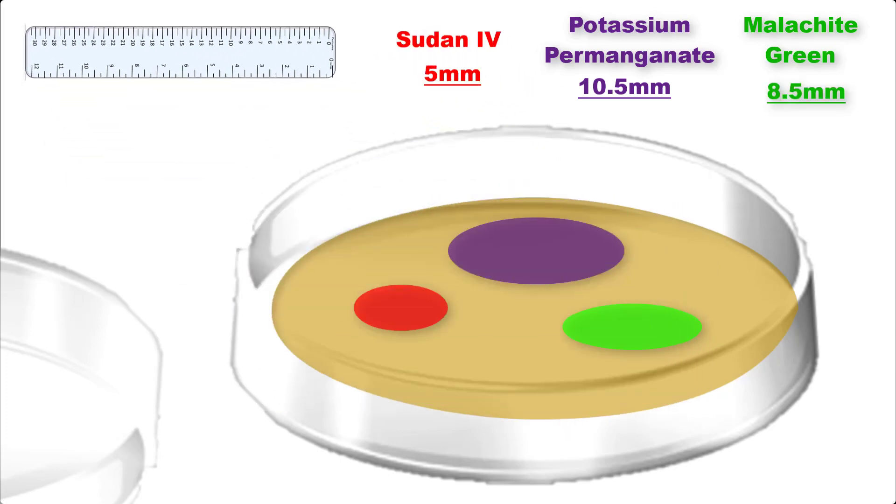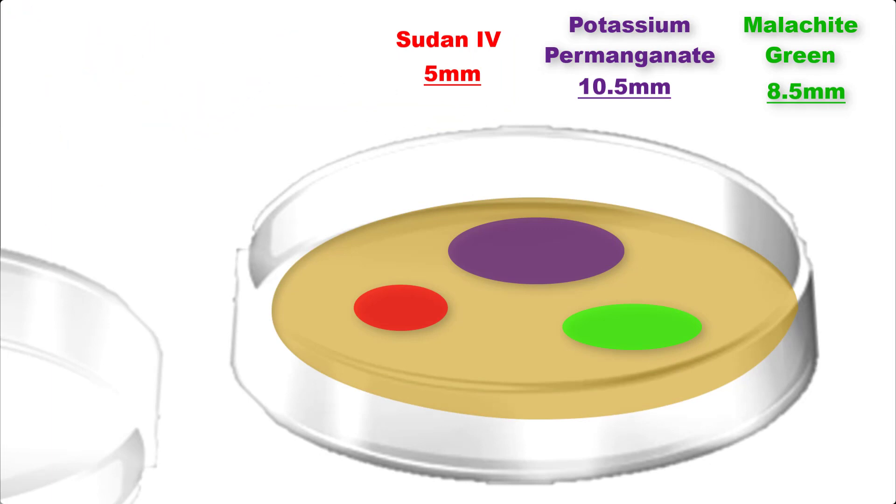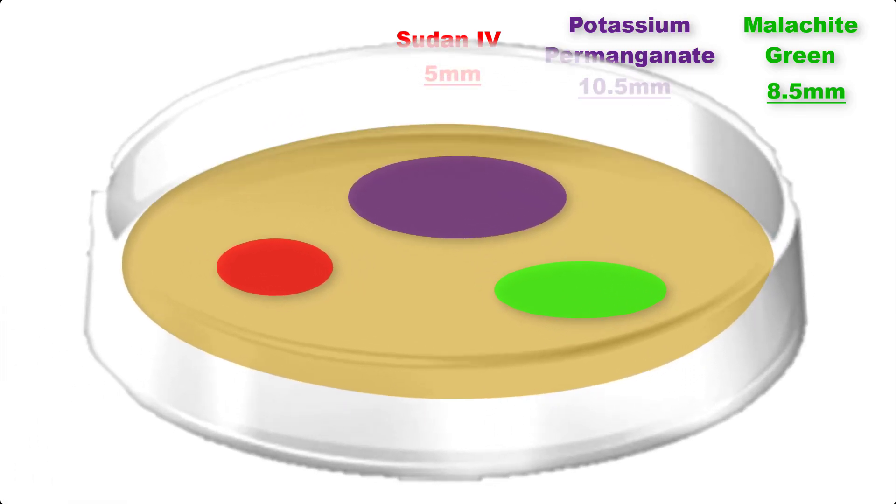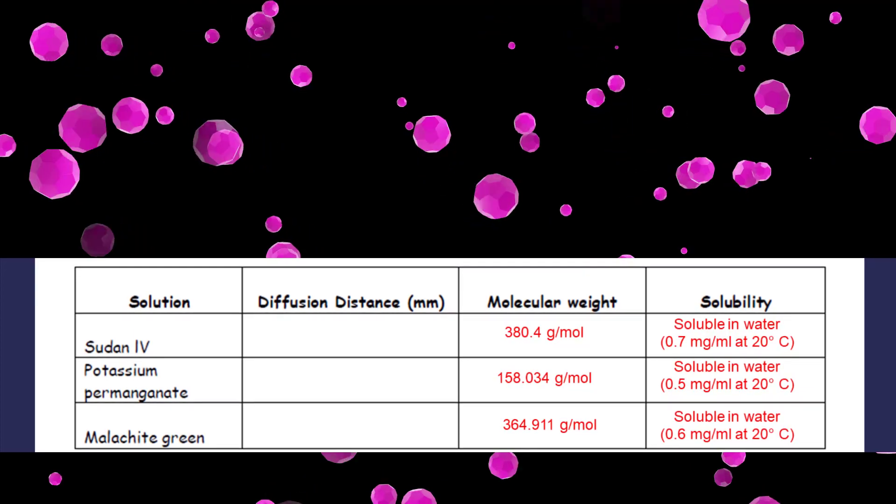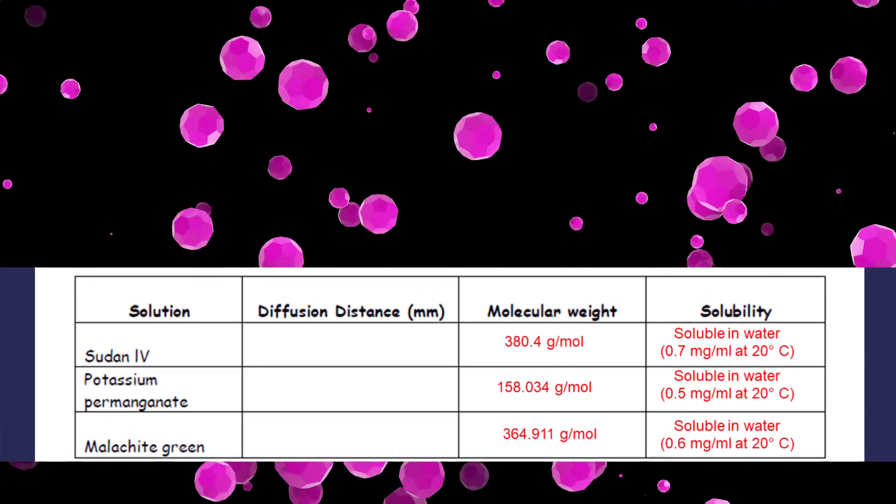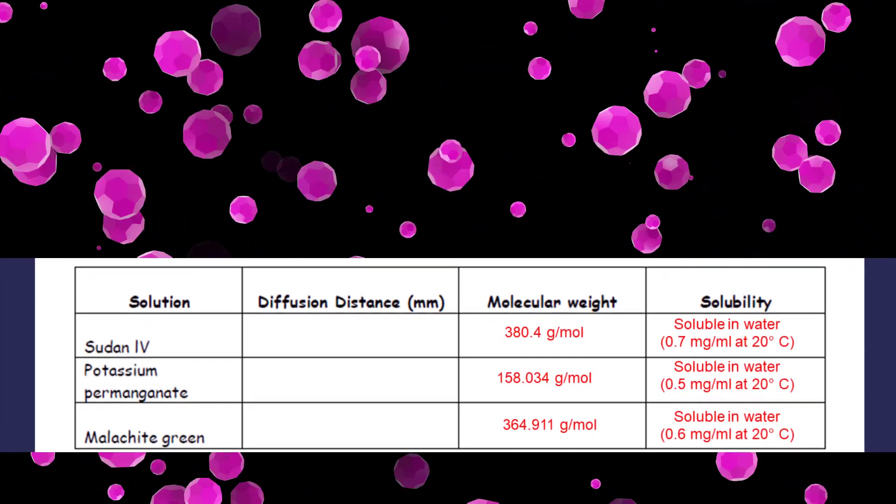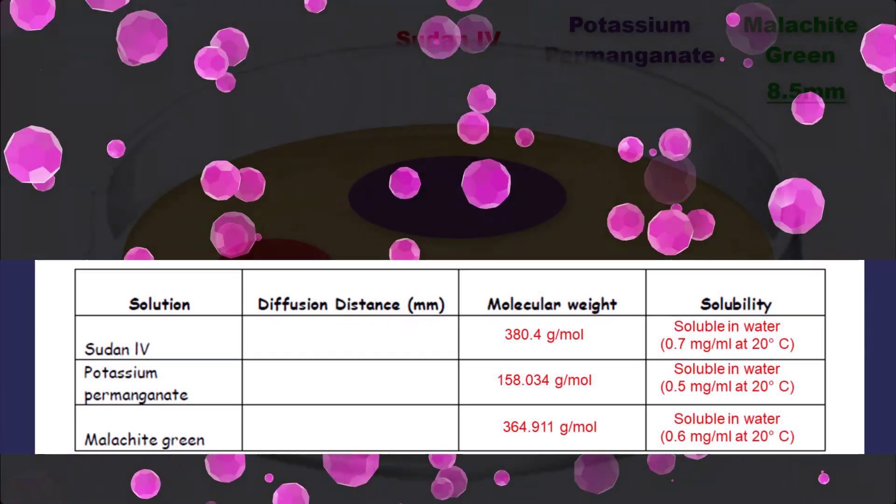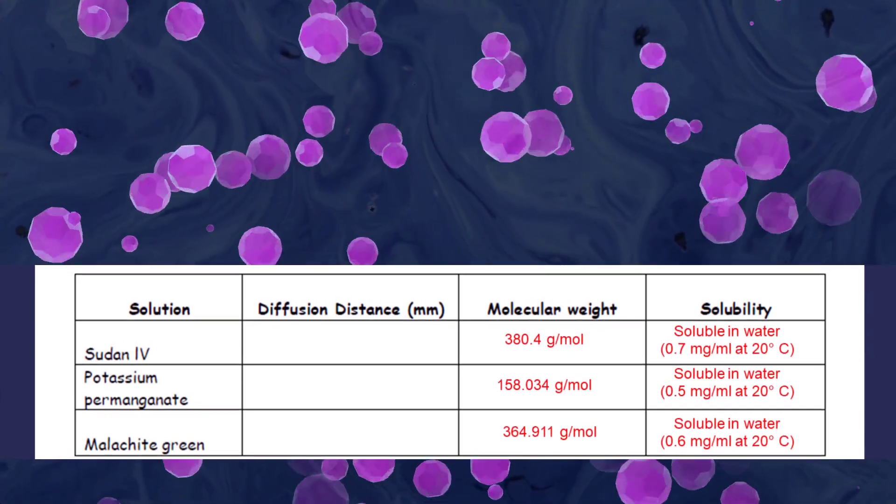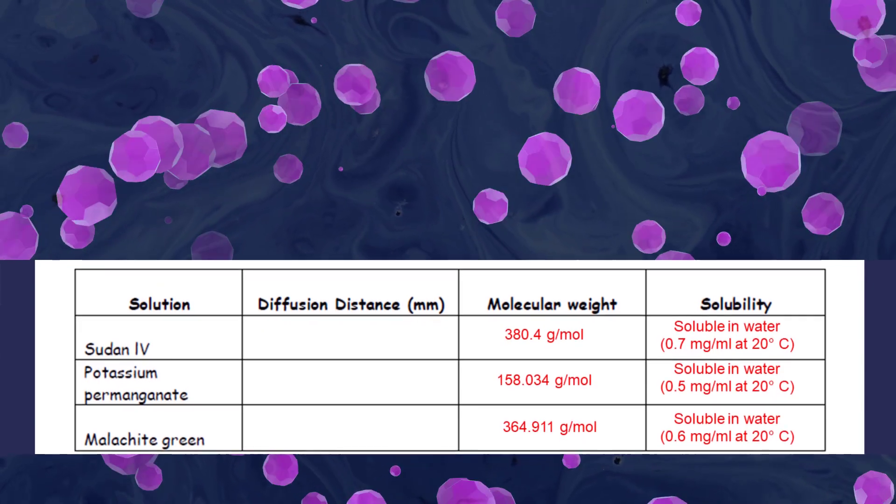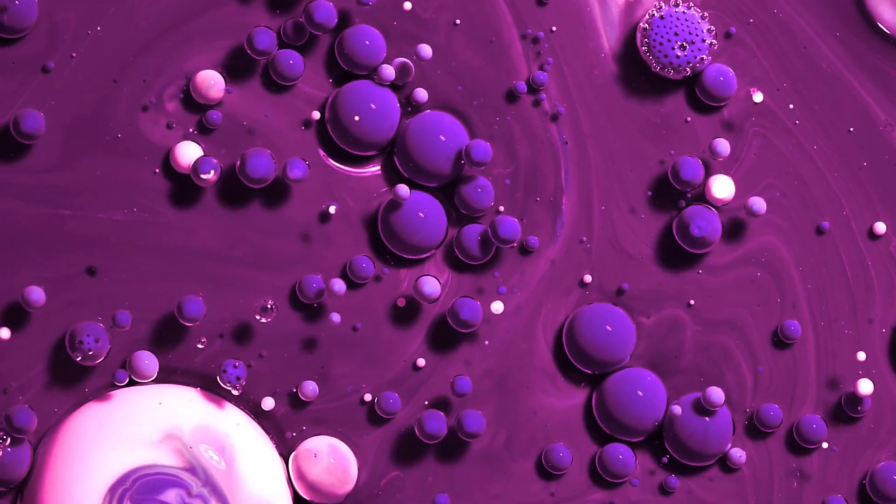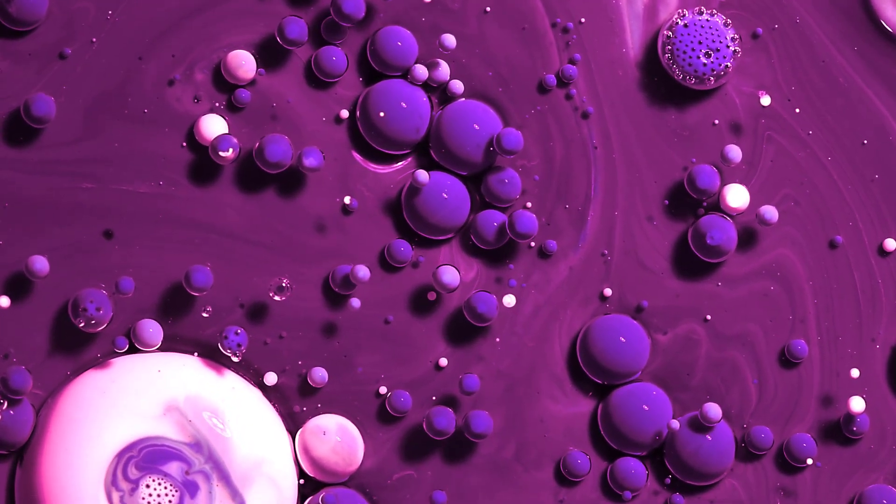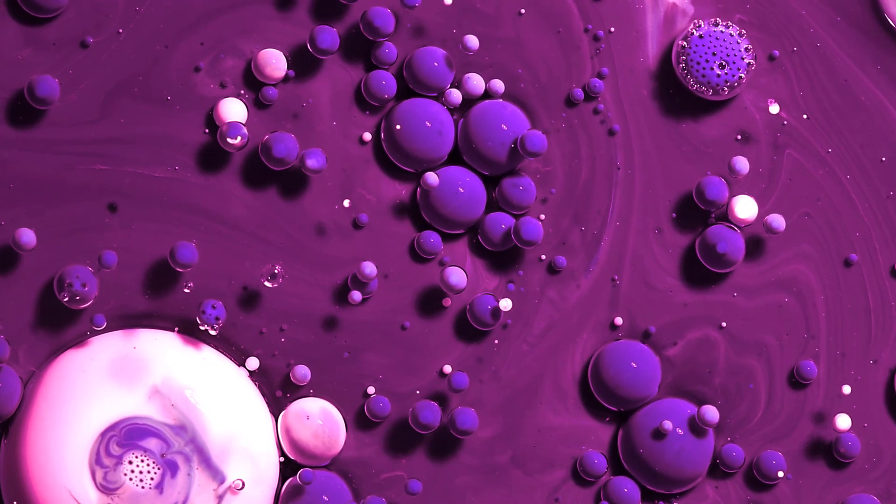We recognize that potassium permanganate was able to diffuse further than both Sudan 4 and malachite green. Let's look at why this might be the case. When looking at the molecular weight, we see the molecular weight for potassium permanganate being much lower than that of Sudan 4 and malachite green. Also, potassium permanganate has the lowest solubility in water, but it's fairly close to the other two. This supports the fact that smaller molecules diffuse more quickly than larger ones.